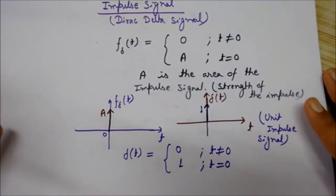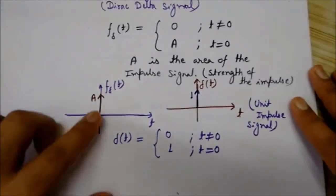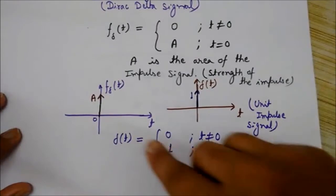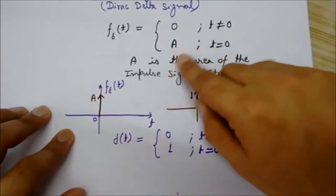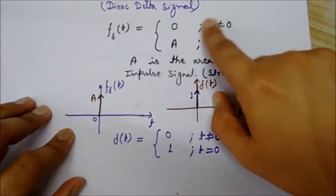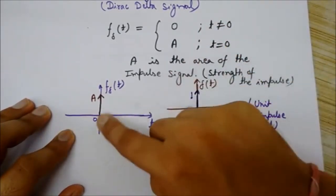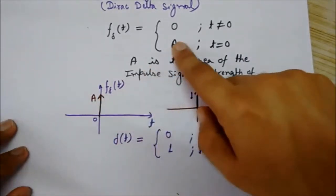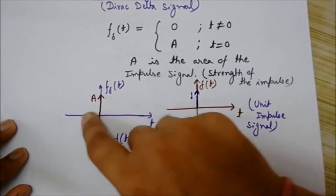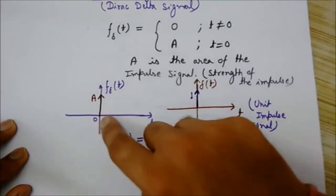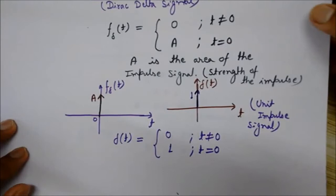Let's understand it with the help of a graph. This is the graph of the impulse signal. As you can see, its value is zero for all values of t which are not zero. Only at t equals to zero does it have value 'a'. At all other points, either negative or positive, its value is zero.